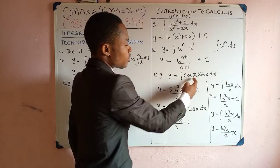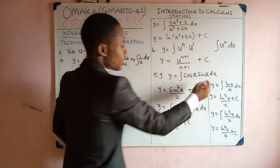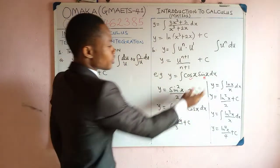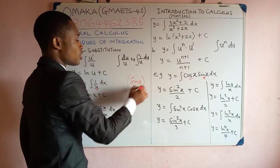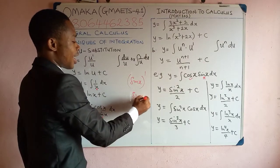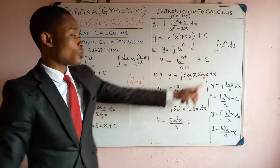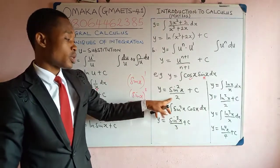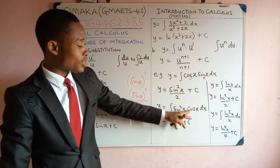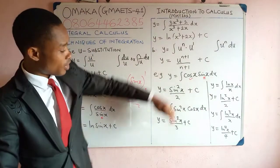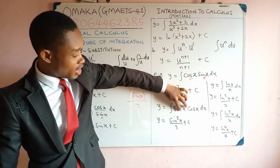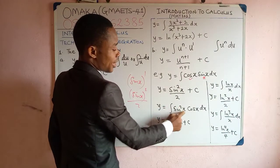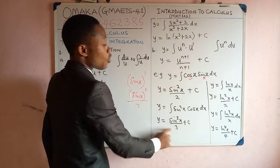For example, y equals integral of cos x times sin x dx. If you differentiate sin x, you get cos x exactly. Therefore, sin x is the same as sin x raised to the power 1. Add 1 to it, you get sin x raised to the power 2 divided by 2, which is the same as sin²x over 2 plus c. Now look at this case: integral of sin²x times cos x dx. Forget about the power — if you differentiate sin x alone, you get cos x. Therefore, add 1 to the power of sin x, and you get sin³x over 3 plus c.